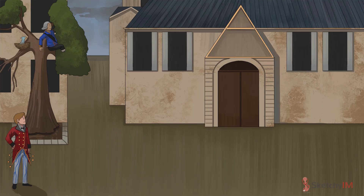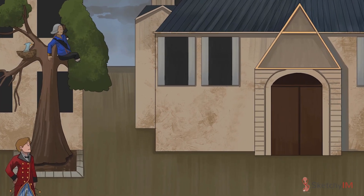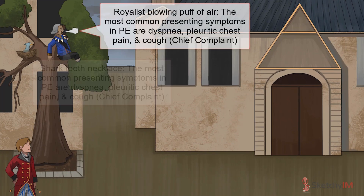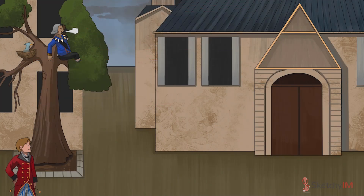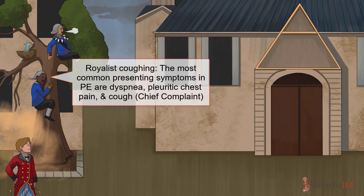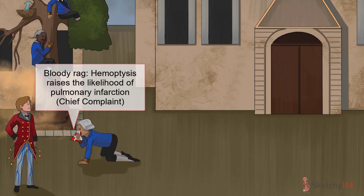The most common presenting symptoms in PE are acute dyspnea, represented by the puff of air being blown by this royalist; pleuritic chest pain, represented by the shark tooth necklace he's wearing across his chest; and cough, represented by this other royalist hacking up a lung. Another symptom you've probably heard of is hemoptysis, represented by this bloody rag.